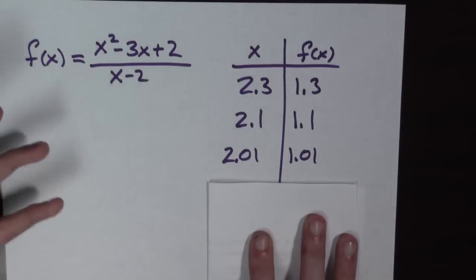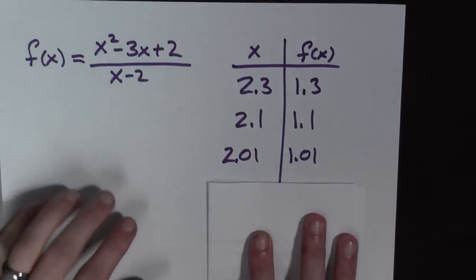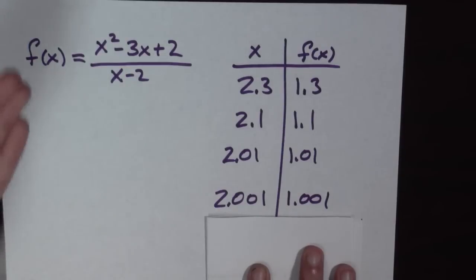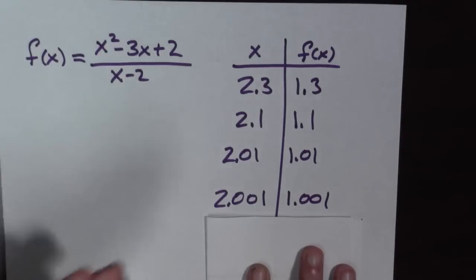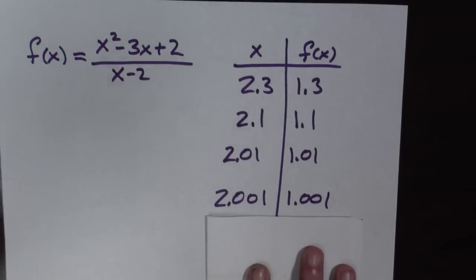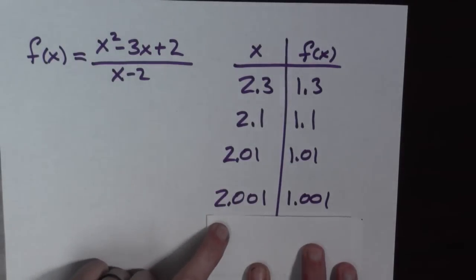We plug in 2.01, f of x is around 1.01. We plug in 2.001, f of x is around 1.001. Again, f of x is getting closer and closer to 1 as x gets closer and closer to 2.